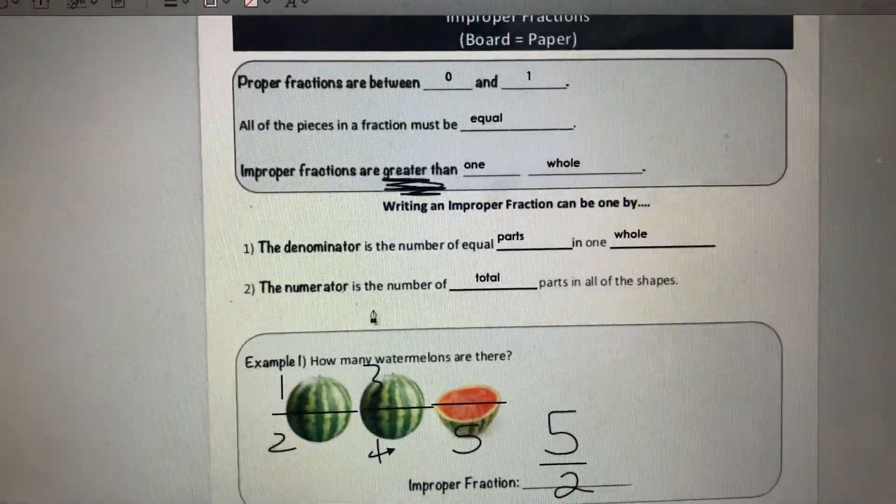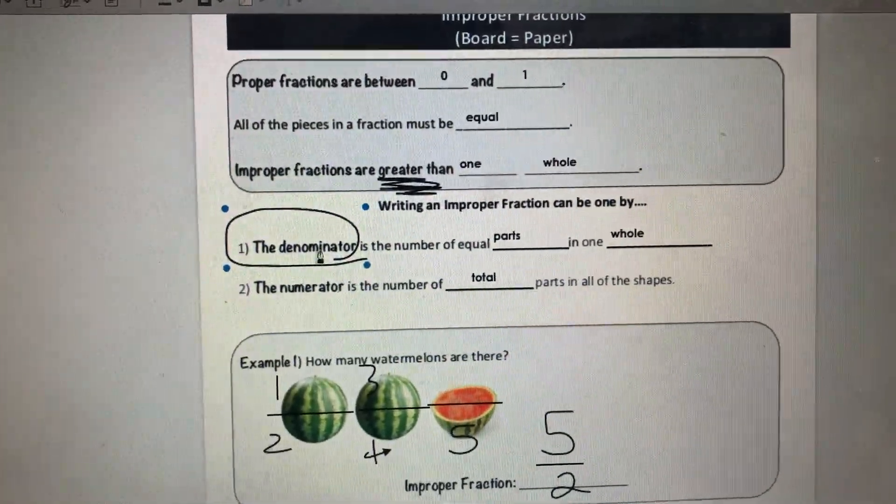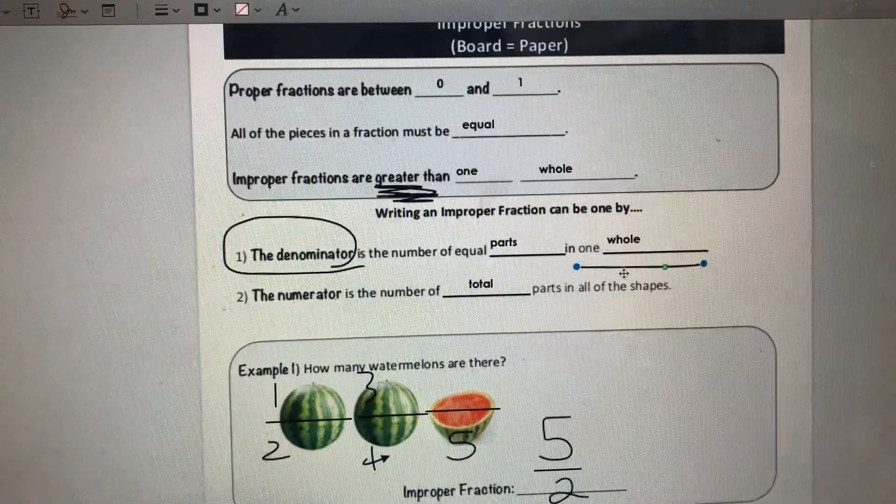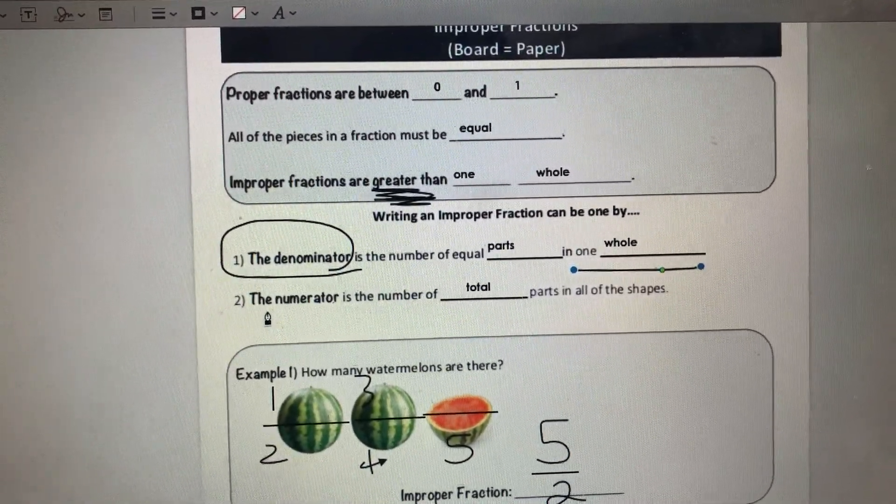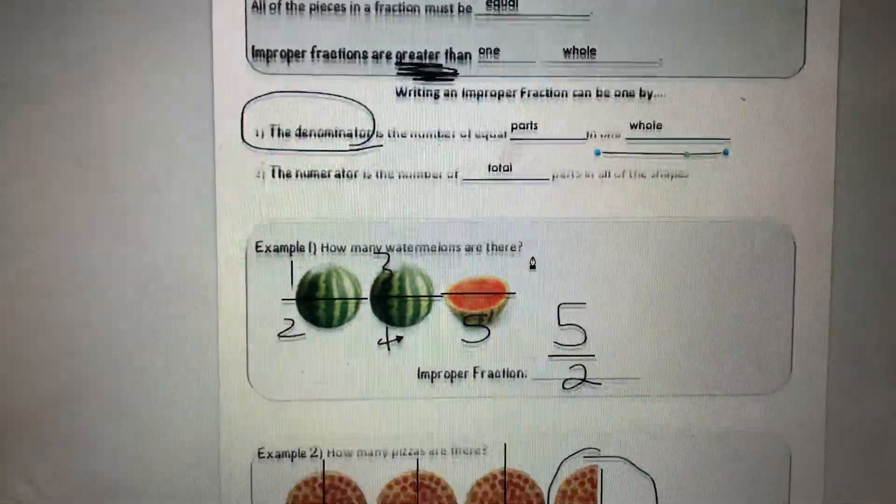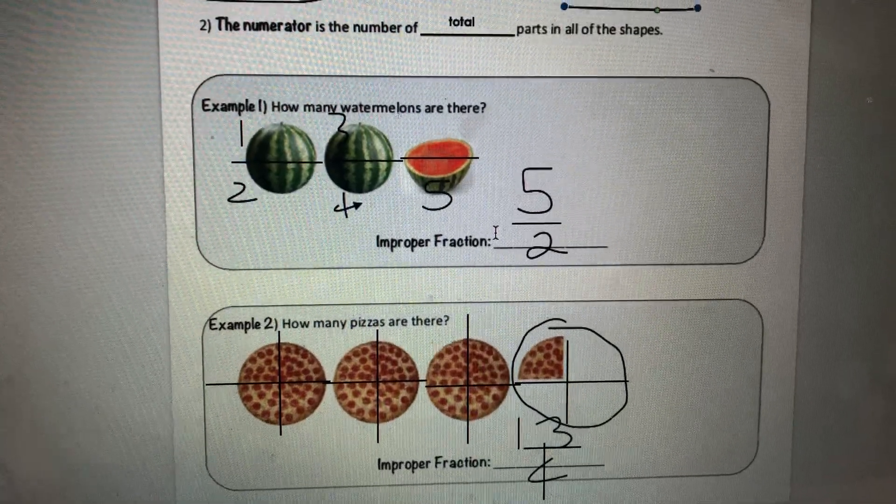Remember, the key here is your denominator, the bottom of your fraction, is the equal parts in one hole. You look at one hole first. Then your numerator is the total number of parts in all the shapes. Shoot your shot. You got this.